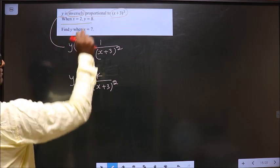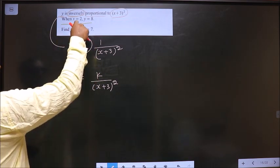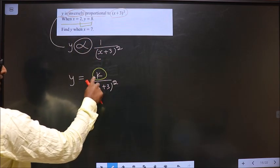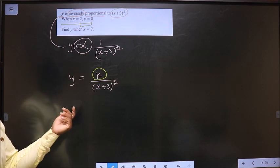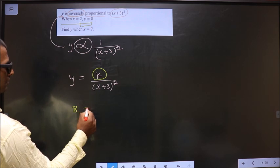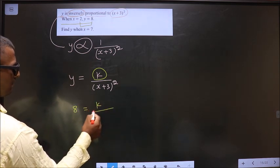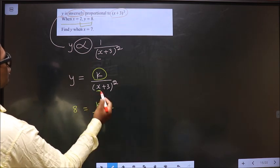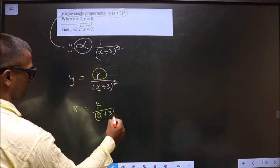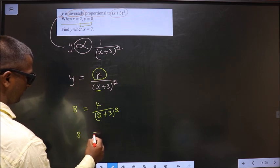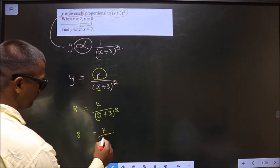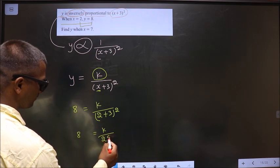When x is equal to 2, y is equal to 8. So now, by making use of these values, I will calculate k. Let us replace the values here. So y is 8, k by x is 2 plus 3 whole square. So 8 equal to k by 2 plus 3 is 5, 5 square is 25.